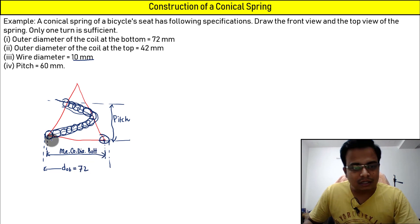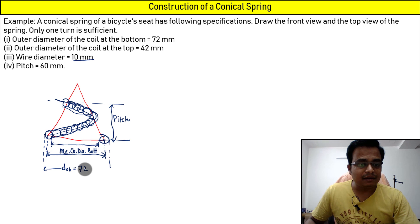So just think about this: this is going to be the inner coil diameter, isn't it? So for finding the inner coil diameter, you need to reduce 10 and 10, that is 20, from the 72.